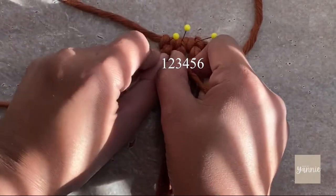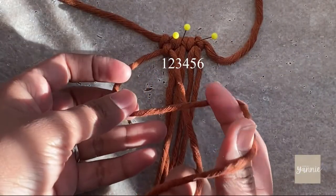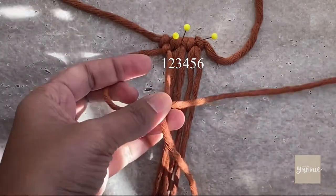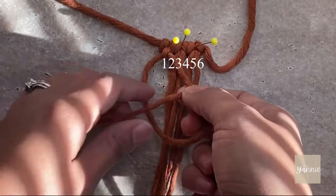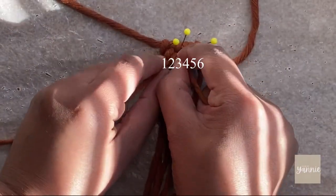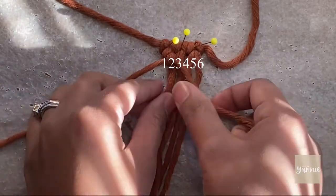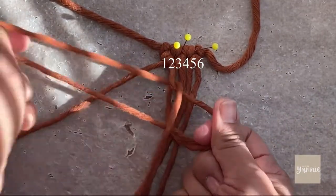Place cord two over and under the support cord. Bring the working end through the loop just formed. Pull and tighten. You just made your first double half-hitch knots. Do the same with cord three.